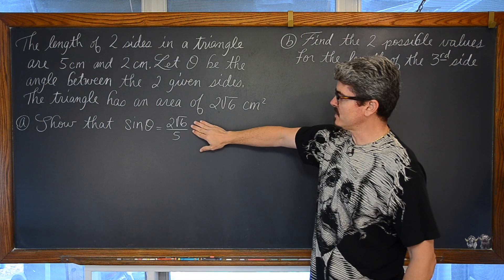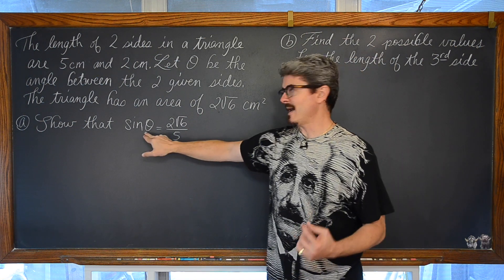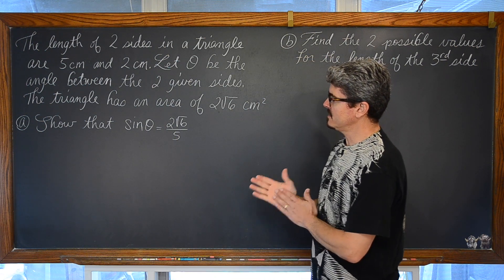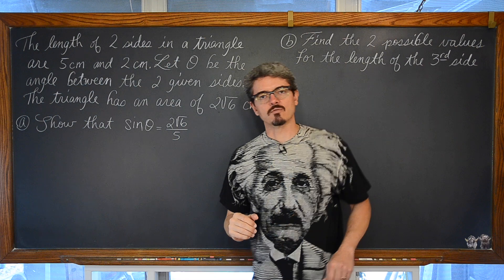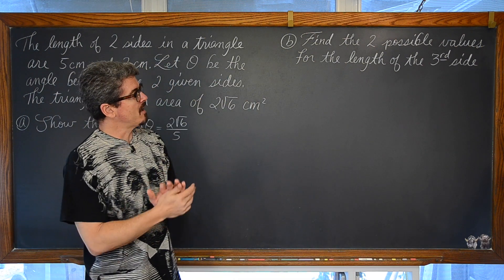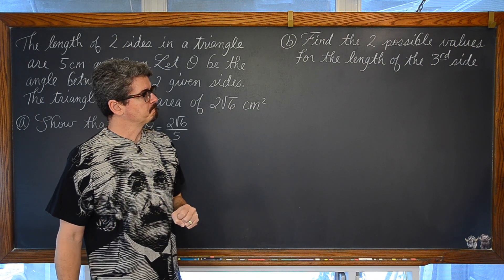We are going to show that the ratio for the sine of theta, this is a non-calculator question so we are not going to actually find the measure of theta, but we are going to show that that ratio, the sine of theta is equal to 2 square root of 6 over 5 and then in part B we are going to find the two possible values for the third length of the triangle.